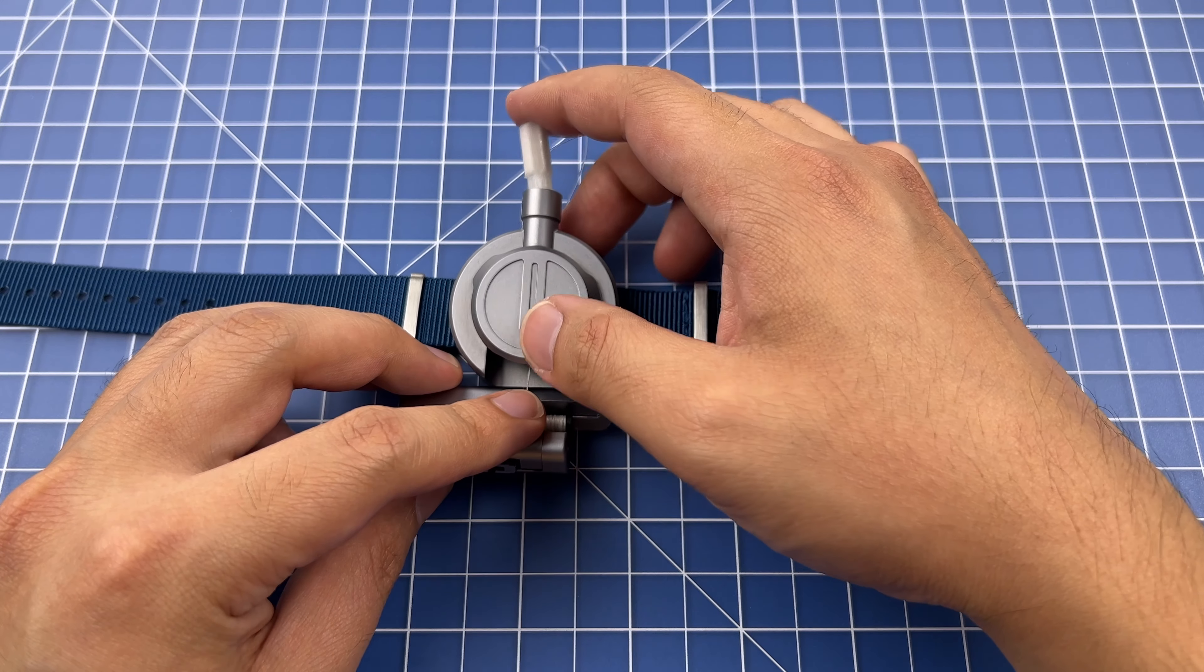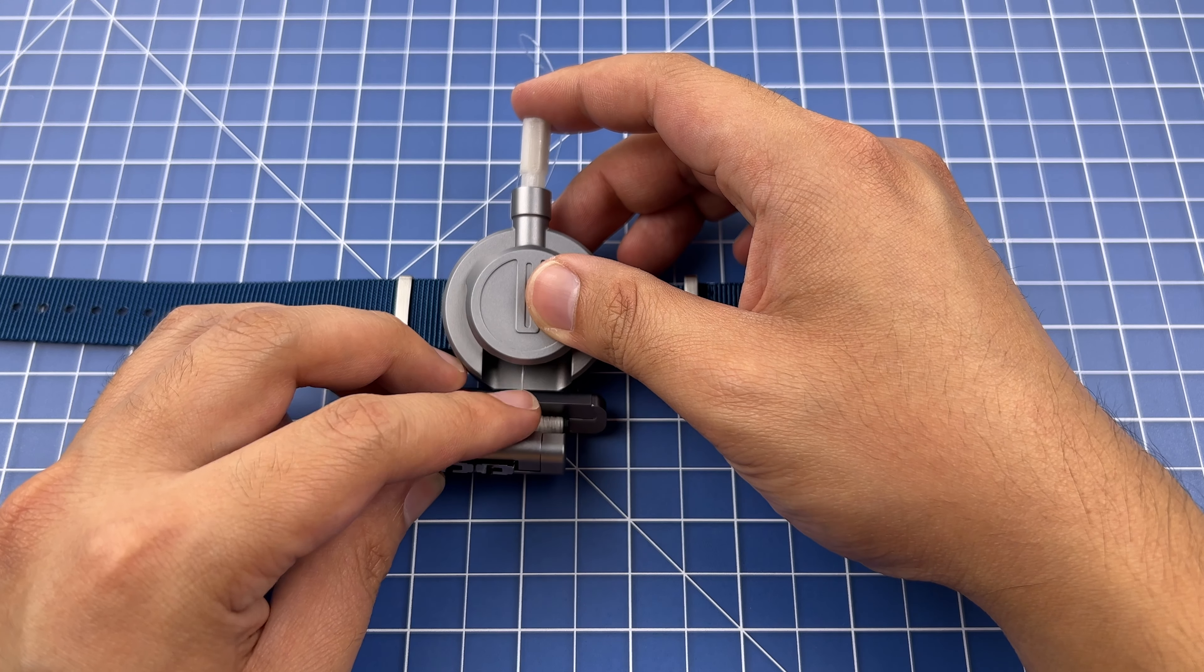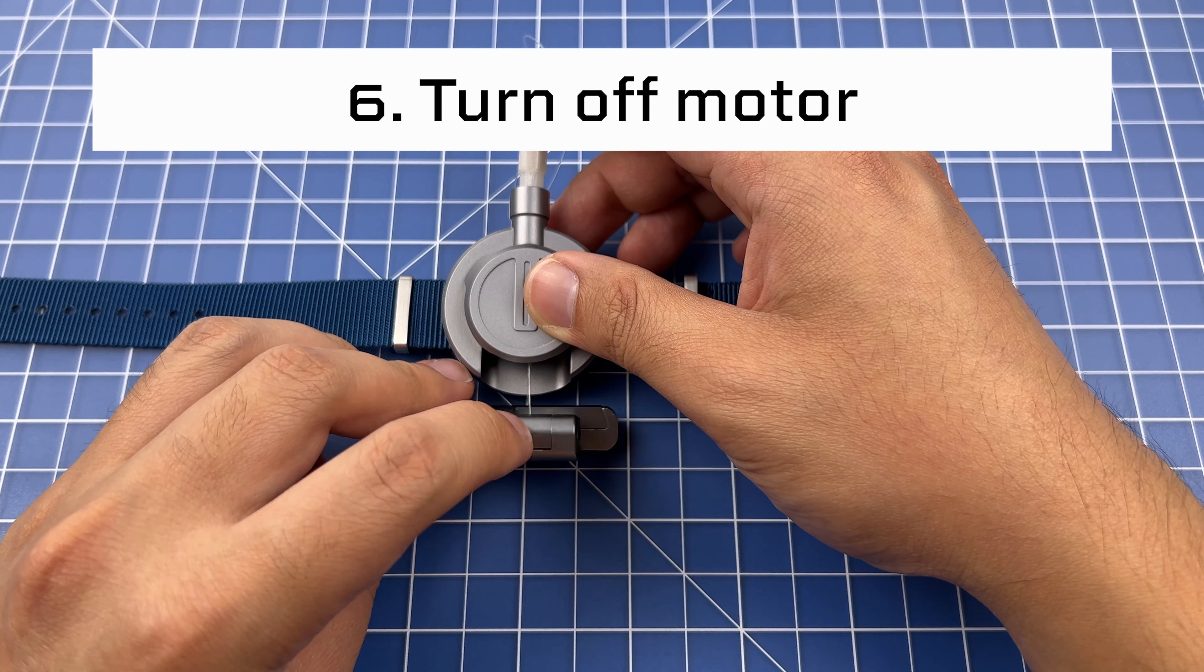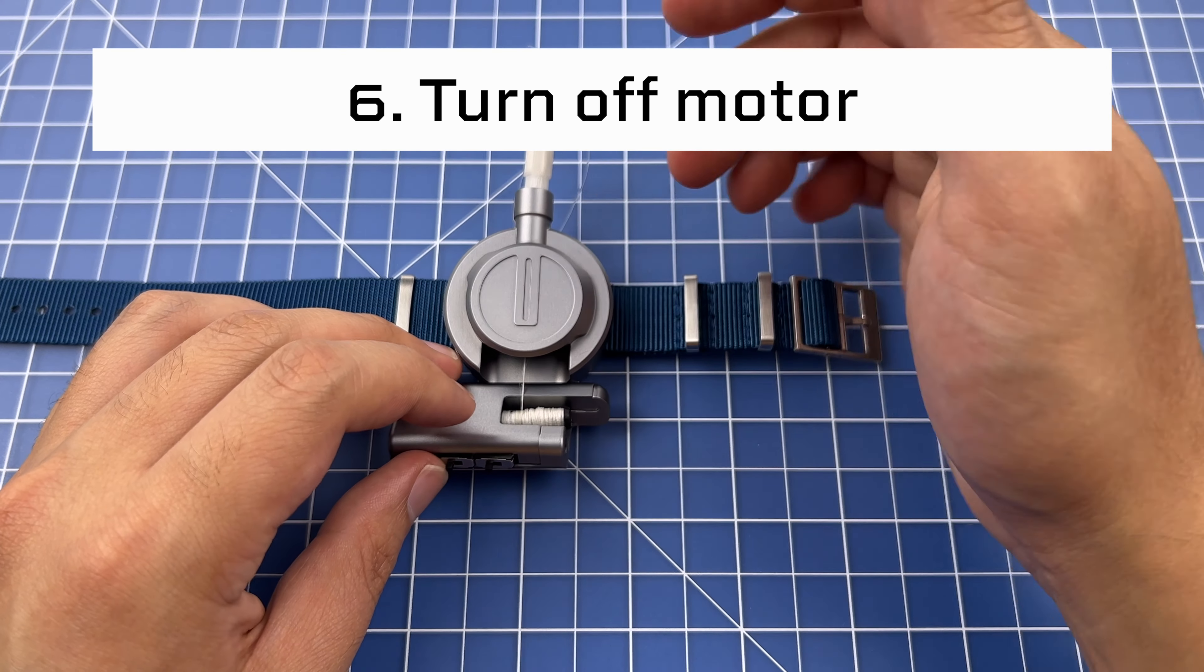The sixth rule is to make sure when all the thread is loaded back onto the spool to turn off the motor immediately. This ensures that the motor doesn't burn out and overheat.